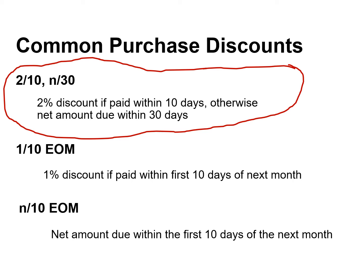Alternatively, the discount period may extend to a specified number of days following the month in which the sale occurs. For example, 1/10 end of month means that a 1% discount is available if the invoice is paid within the first 10 days of the next month. When the seller elects not to offer a cash discount for prompt payment, credit terms will specify only the maximum time period for paying the balance due. For example, the credit terms may state net 10 end of month, meaning the buyer must pay the net amount within the first 10 days of the next month.